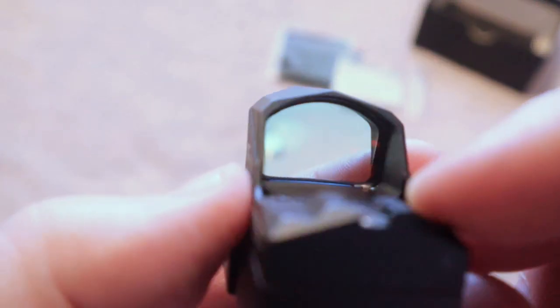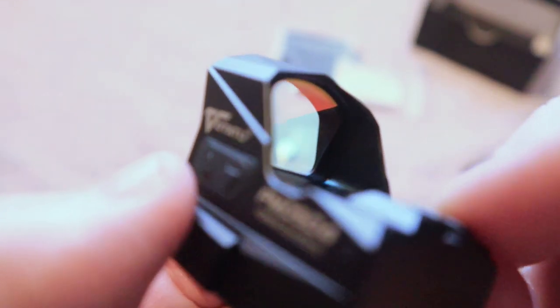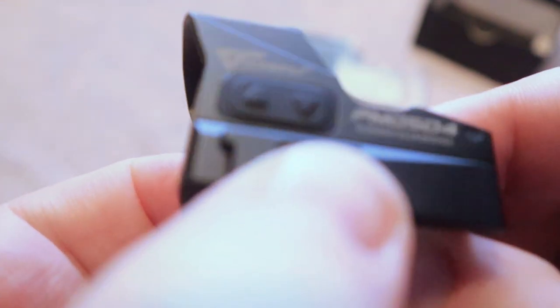Now, what we're going to do is I'm going to turn the optic on just to show you the reticle that comes on this. Just press and hold the button on the side. This is your controls. It does have a few different reticles for you to choose from.